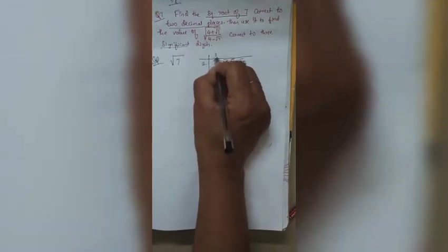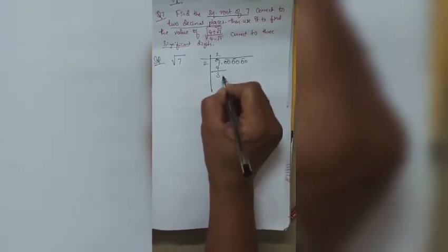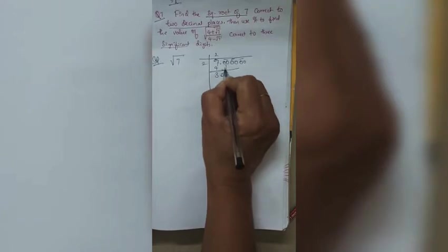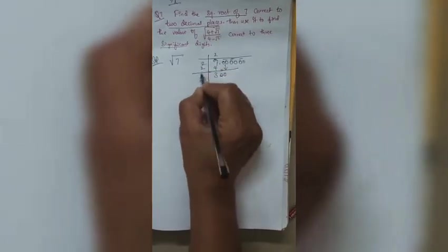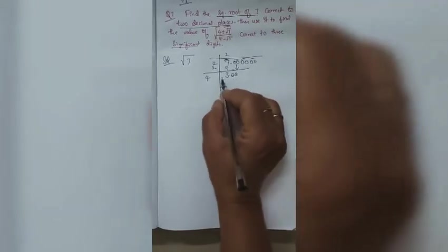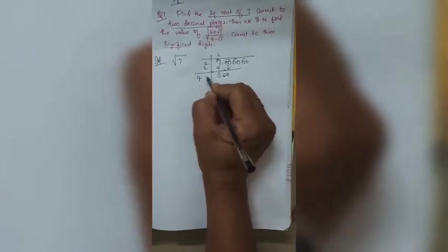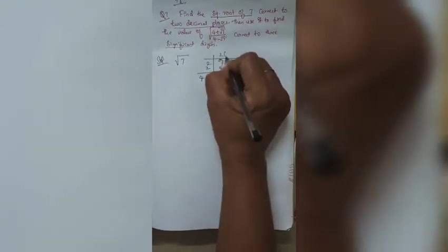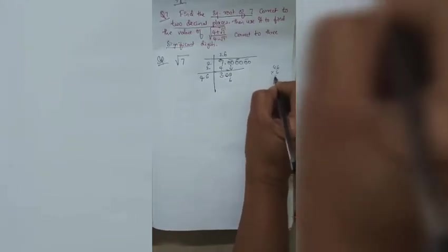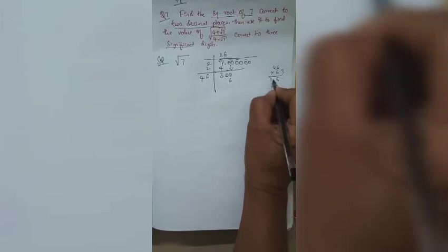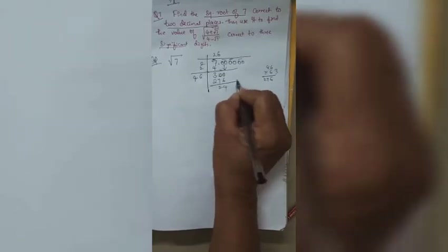The first digit: nearest perfect square to 7 is 4 (2² = 4). 7 minus 4 = 3. Bring down two zeros to get 300. Add 2 to the divisor: new divisor starts with 4. We try 46×6 = 276. Then 300 minus 276 gives remainder. So far the quotient is 2.6.